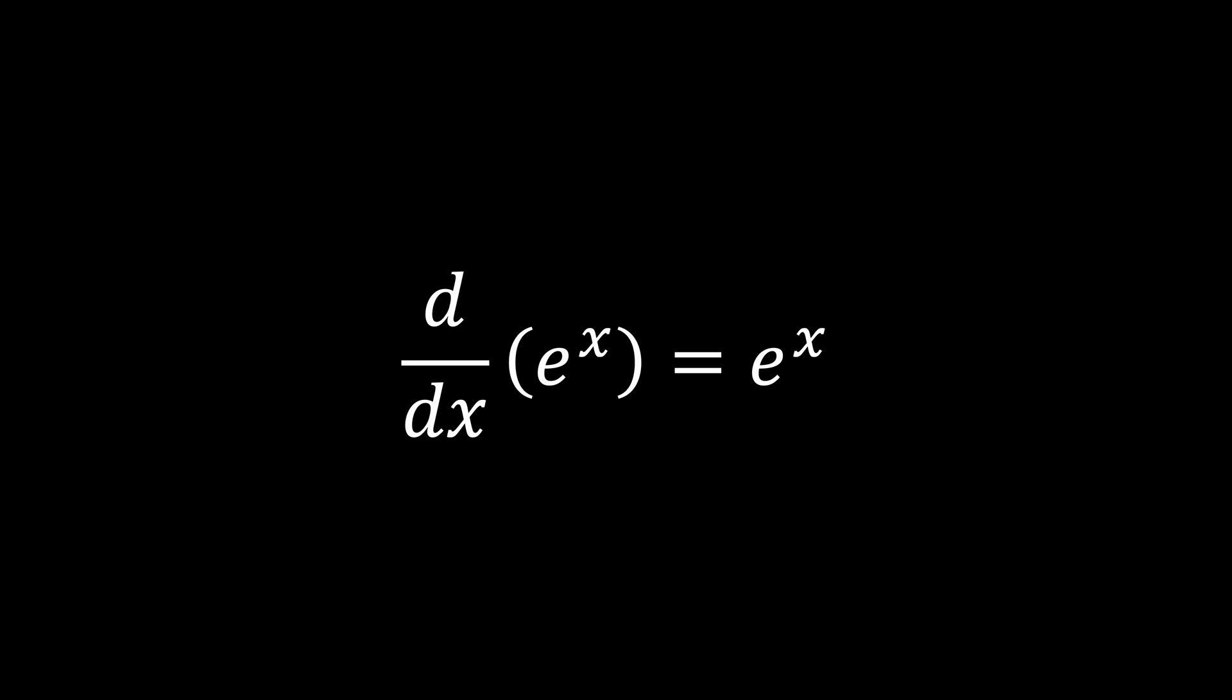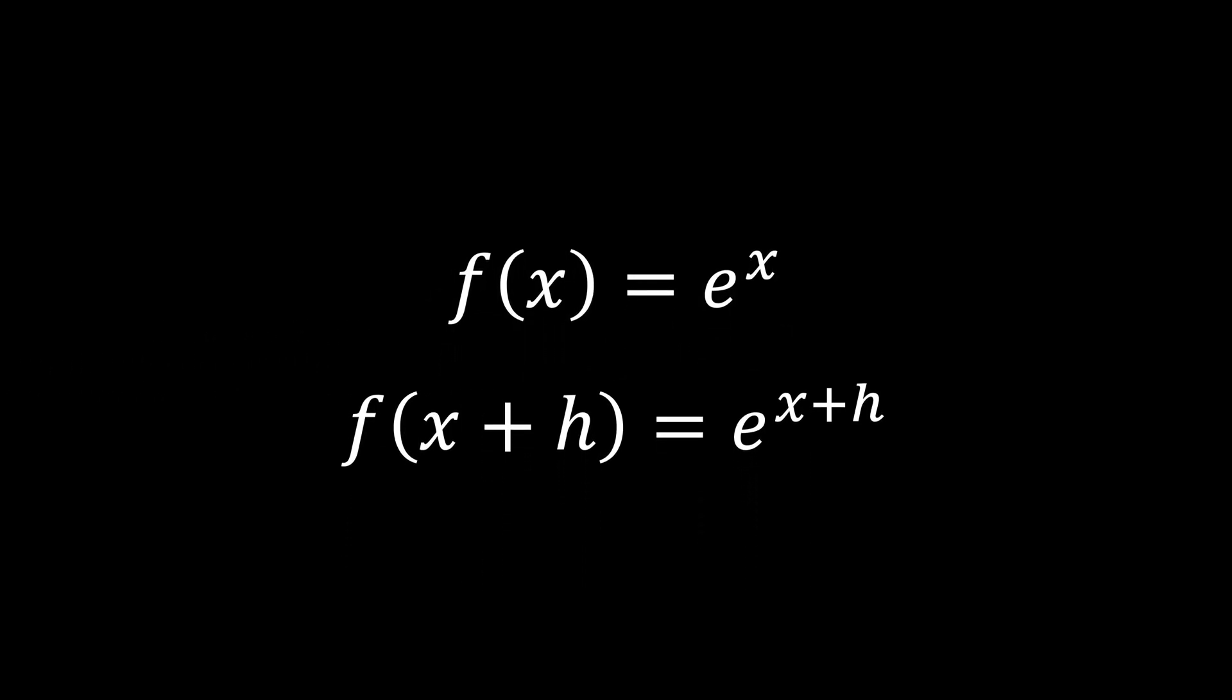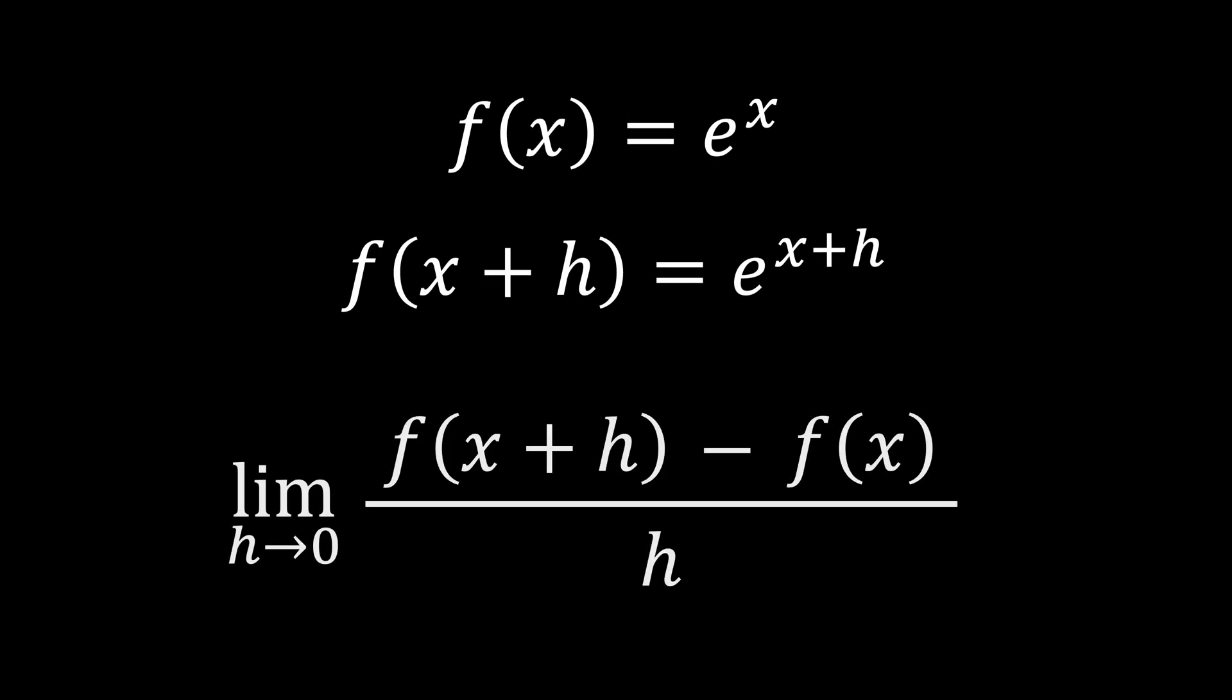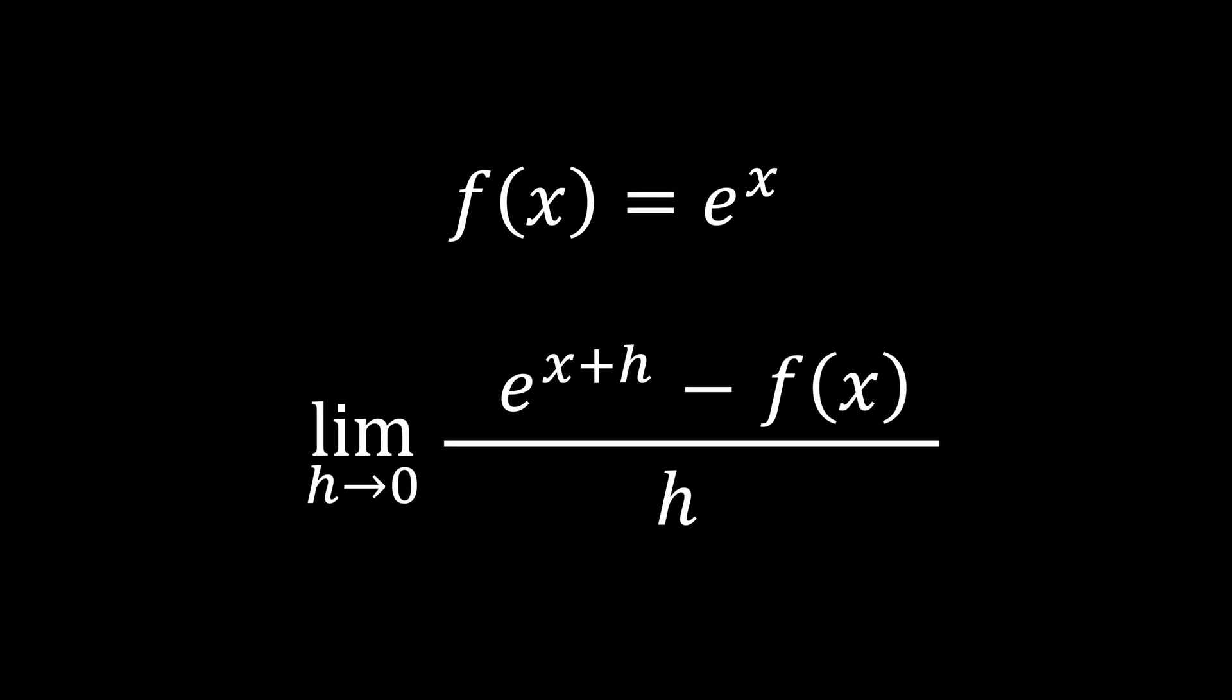How can we prove that the derivative of the exponential function is itself? As with any mathematical proof of a derivative, we start by considering an incremental change in the chosen function and substituting these into the limit definition of the derivative.